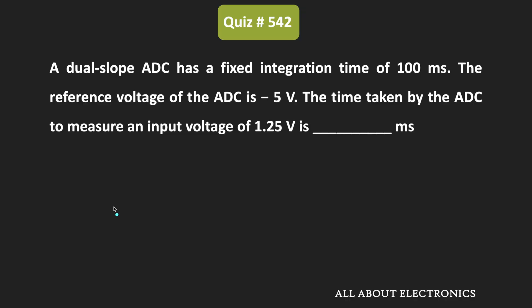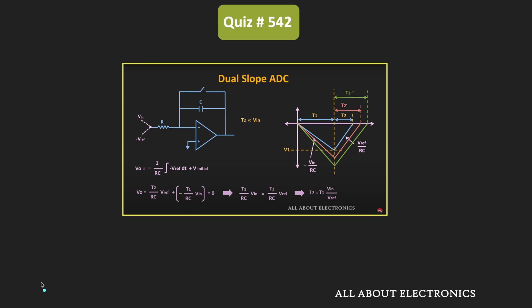Welcome to the YouTube channel all about electronics. In this question, we've been given that for the dual slope ADC, the fixed integration time is equal to 100 milliseconds. The reference voltage is equal to minus 5 volts. We've been asked to find the time taken by this ADC to measure the input voltage of 1.25 volts.